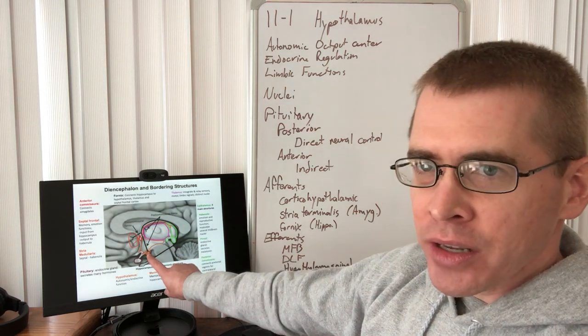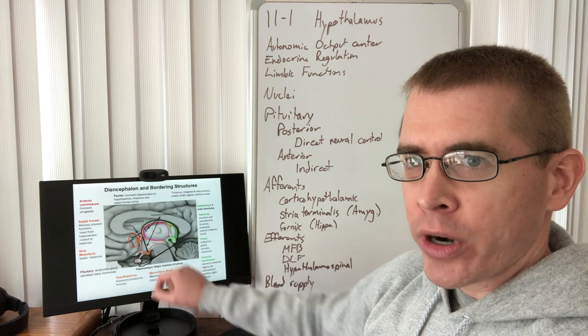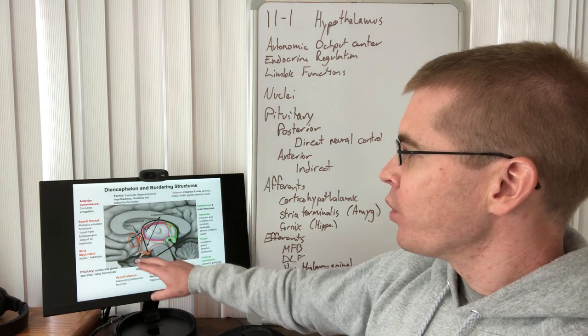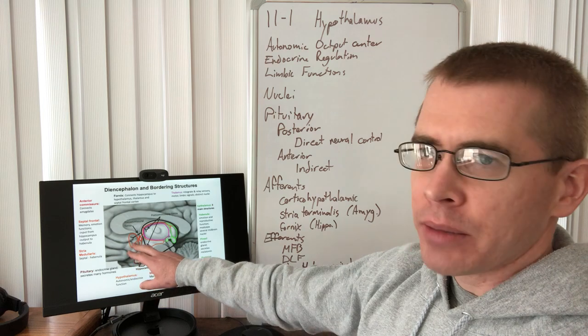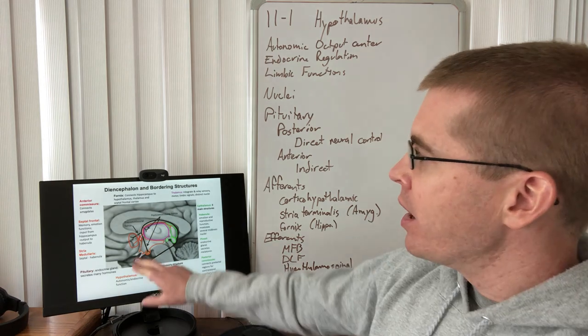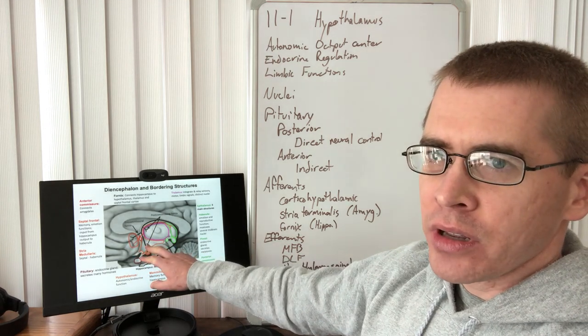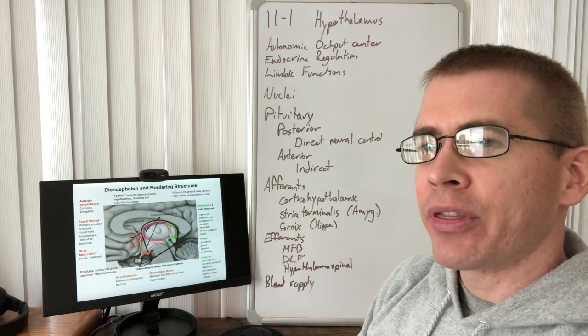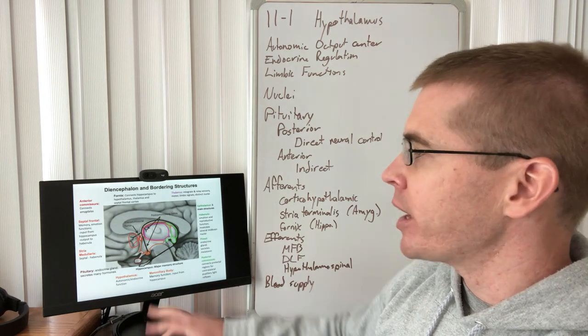The mammillary bodies are part of the hypothalamus, so the fornix is still involved in this lecture. We're going to talk about the septal frontal portions of the cortex, the telencephalon, and their connections to the hypothalamus. These limbic regions inform the hypothalamus and our autonomic outputs.